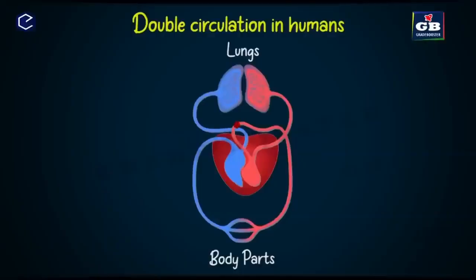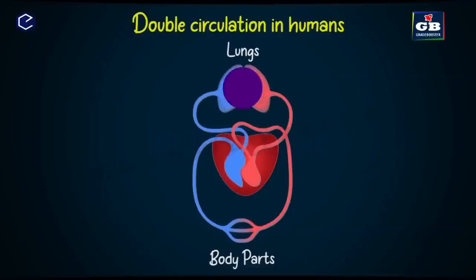Animals like birds and mammals have a four-chambered heart. In their circulatory system, oxygenated and deoxygenated blood circulates separately. The blood travels through the heart twice in one complete cycle — once between the heart and lungs, and once between the heart and body parts. This is called double-circuit circulation or double circulation.